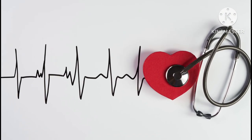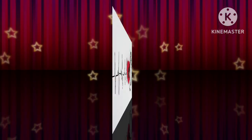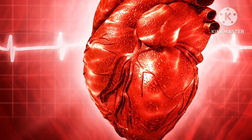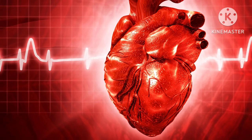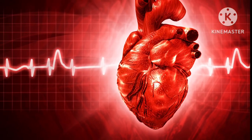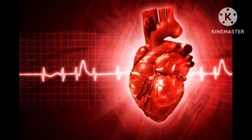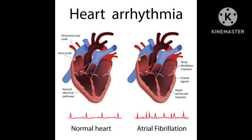Surgical options include surgical ablation, major surgery, and ventricular resection. If coronary heart disease is causing arrhythmias, coronary artery bypass grafting may be recommended. This surgery improves blood supply to the heart muscle.